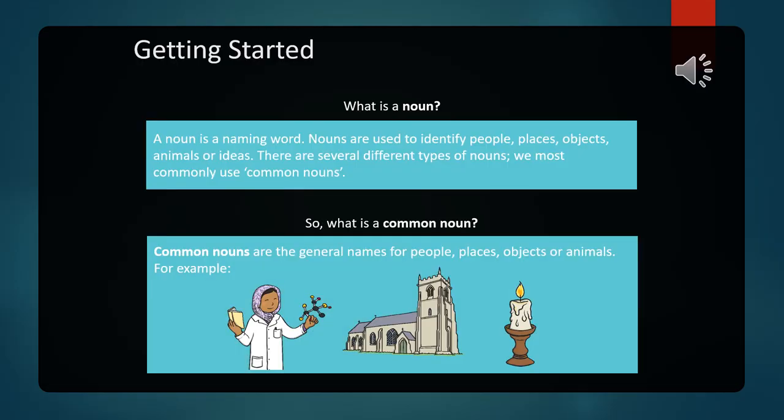Moving on, the last part we're going to have at the end of the week is the grammar part — the conventions. We're going to start off talking about nouns: common nouns and proper nouns, and the main difference between them. Before we start off with kinds of nouns, we have to begin with the definition of a noun itself. A noun is a naming word, used to identify people, places, objects, animals, or even ideas, and it has several types.